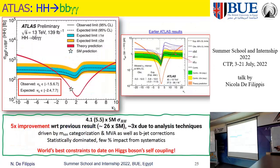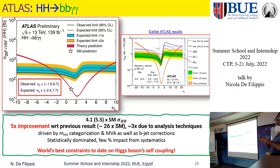If I measure something with one technique and measure the same thing with another technique, I want to combine both results to get a better constraint — that is what combination means. In our case it's a statistical combination using what is called an inference tool. For CMS, this tool allows you to get upper limits on the cross-section, upper limits on kappa_lambda, profile likelihood, significance, and any possible kind of plot as output from the fitting procedure.